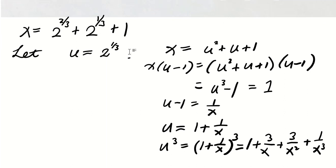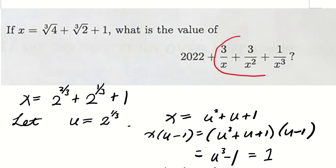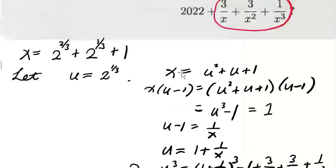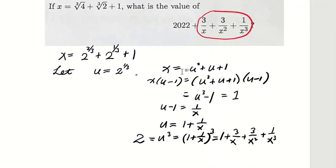Again, the left-hand side equals u cubed, which equals 2. Now, the term 3 over x plus 3 over x squared plus 1 over x cubed is actually equal to 2 minus 1, which equals 1.